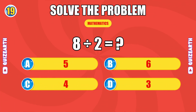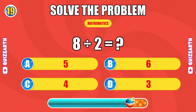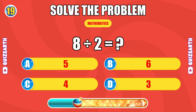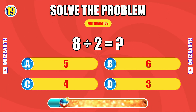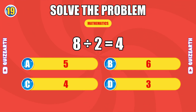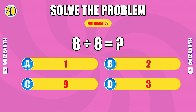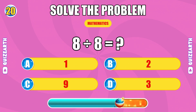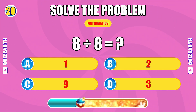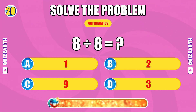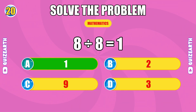What is eight divided by two? Phenomenal — the answer is four. How much is eight divided by eight? Absolute flow — the answer is one.